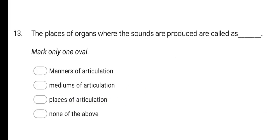Next question: the places of organs where the sounds are produced are called as — options are Manners of Articulation, Mediums of Articulation, Places of Articulation, and None of the above. The correct answer is Places of Articulation.